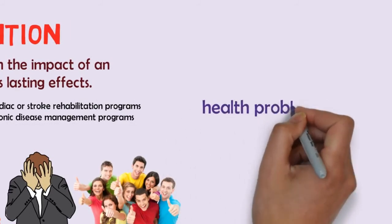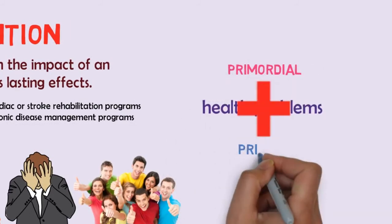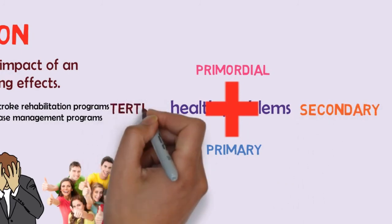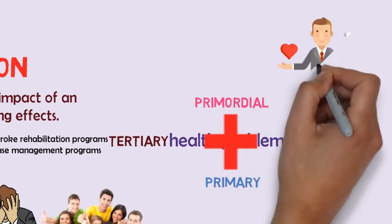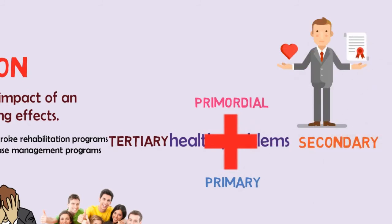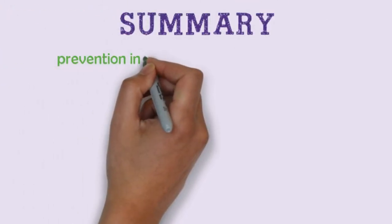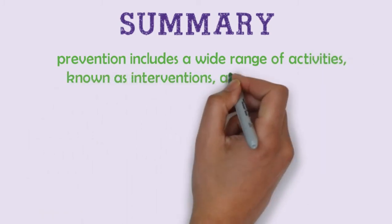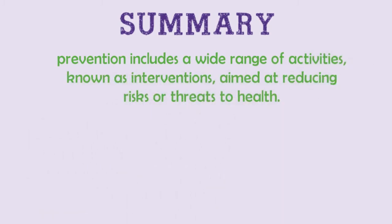Consequently, for many health problems, a combination of primordial, primary, secondary, and tertiary interventions are needed to achieve a meaningful degree of prevention and protection. In summary, remember that prevention includes a wide range of activities known as interventions aimed at reducing risks or threats to health.